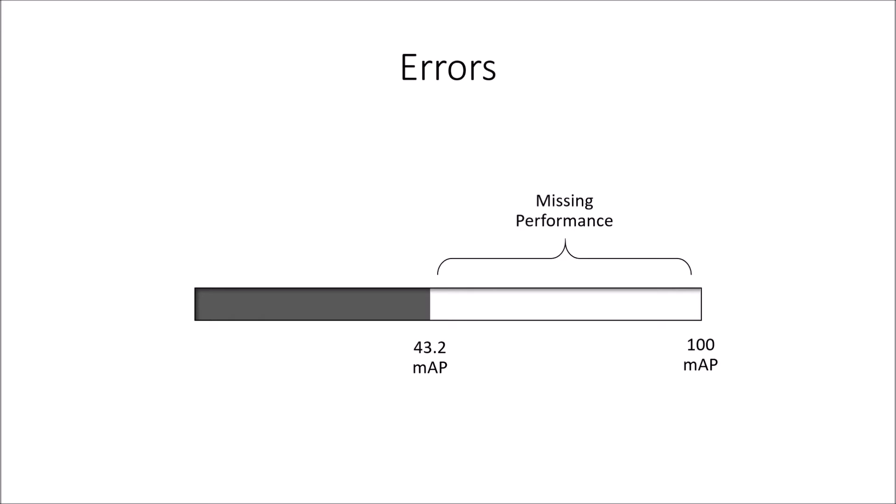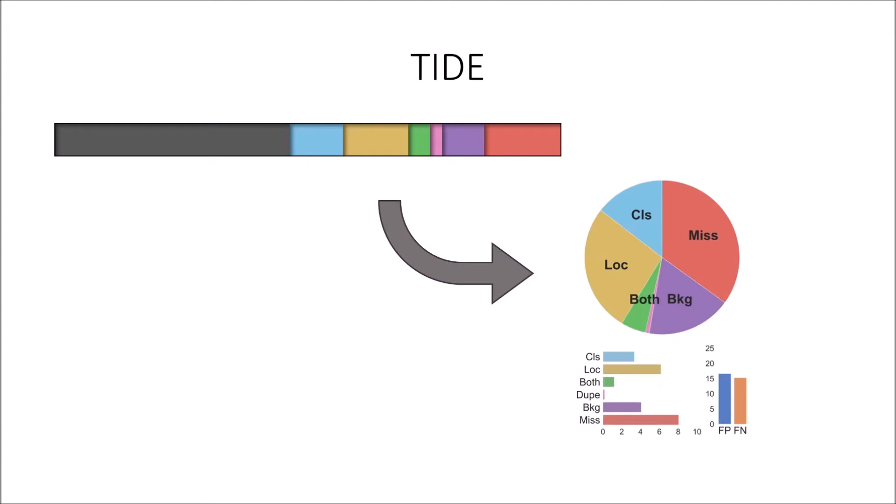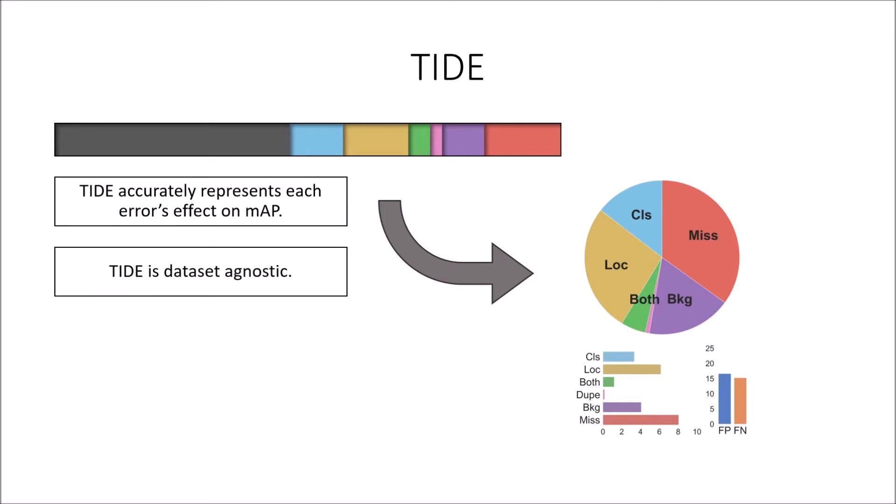With TIDE, our general toolkit for identifying detection and segmentation errors, we break down the missing MAP into 6 error types that fully explain where the model is losing performance. We take careful consideration to make sure that each error type's contribution to the missing MAP is accurately represented, which is necessary to draw meaningful conclusions. Furthermore, our approach is dataset-agnostic, making cross-dataset comparison possible, and our method uses all detections produced by the model, making this a holistic summary. Finally, our toolkit is easy to augment and allows for deeper analysis when necessary.